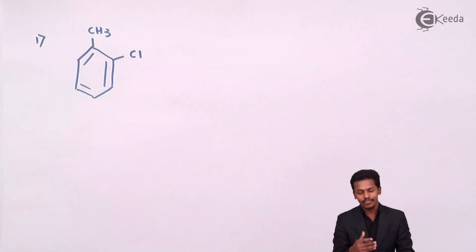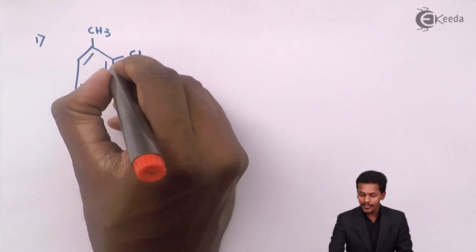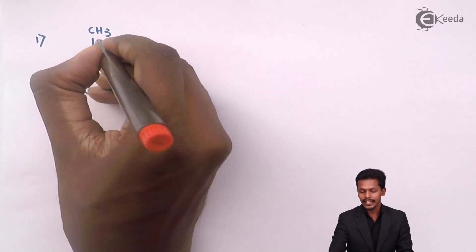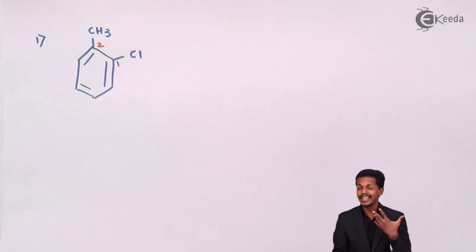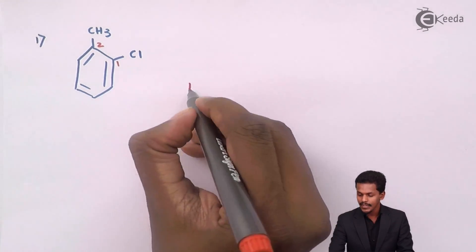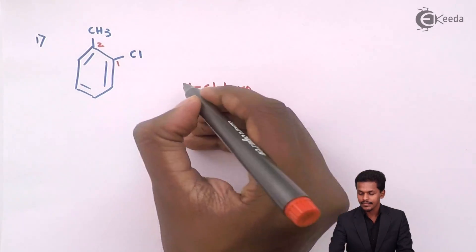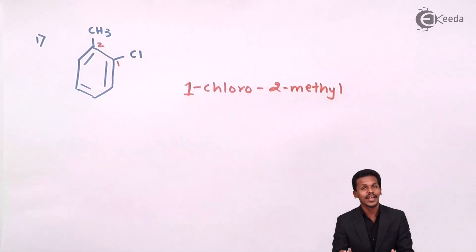The halogen atom is attached to the aromatic ring, and all the carbon atoms are connected continuously to each other. So this is carbon number 1, and this is carbon number 2. On the second position we find a methyl group, and on the first position we have a chloro group. According to IUPAC, the name should be given in alphabetical order. Therefore, the IUPAC name for this structure is 1-chloro-2-methylbenzene.